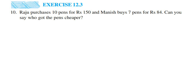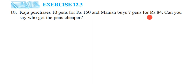Hey everyone, here is a question from Exercise 12.3, 10th question. The chapter is Decision Proportion of Classics. The question is: Raju purchases 10 pens for Rs. 150 and Manish buys 7 pens for Rs. 84. Can you say who got the pens cheaper?